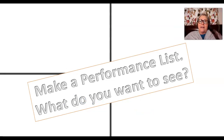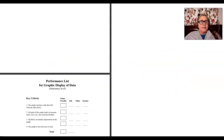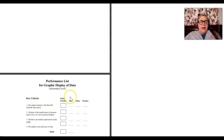One thing you can do is think about a performance list. A performance list is what do you want to see. Here's an example of a performance list on graphic display of data: the graph contains a title that tells the data, and there are all these key criteria listed. The possible points are shown, and oftentimes people have the students evaluate themselves first, then maybe another student evaluates, and then the teacher comes through and evaluates.